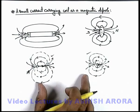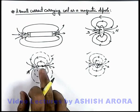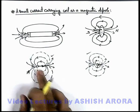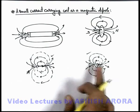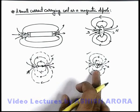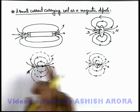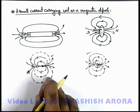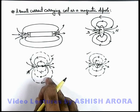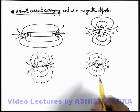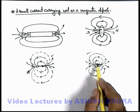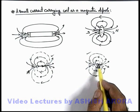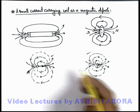From a far away distance, if we just have a look at a very short magnetic dipole or a very small coil, we cannot differentiate the two just by looking at their magnetic lines configuration. So we can say that when a coil is very small in size, it behaves like a short magnetic dipole.